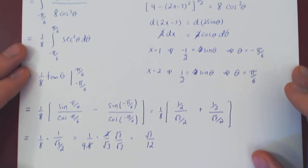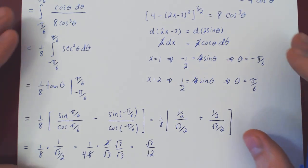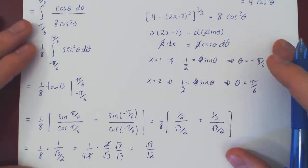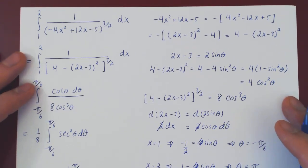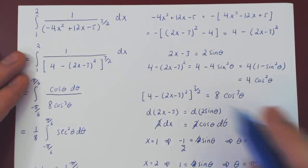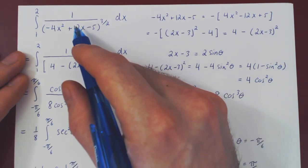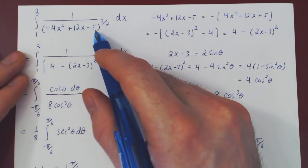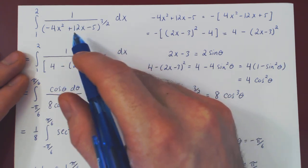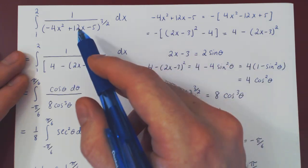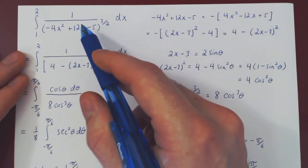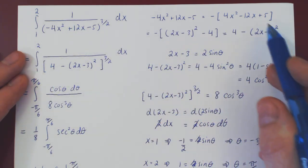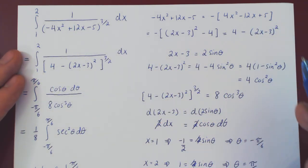And we're done. The only difference between this problem and the previous one was the presence of a linear term in the quadratic in the original integral. To fix the problem, we eliminate the linear term, which is accomplished by simply completing the squares.